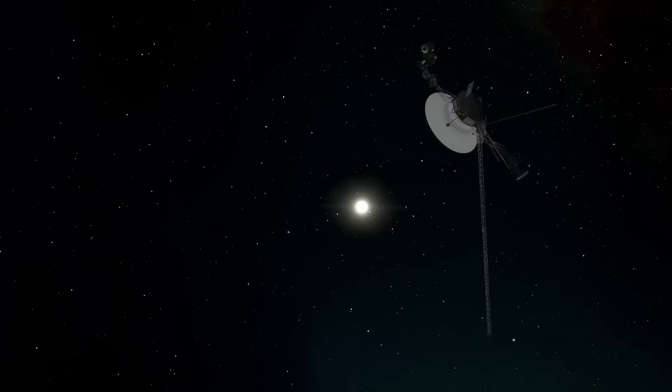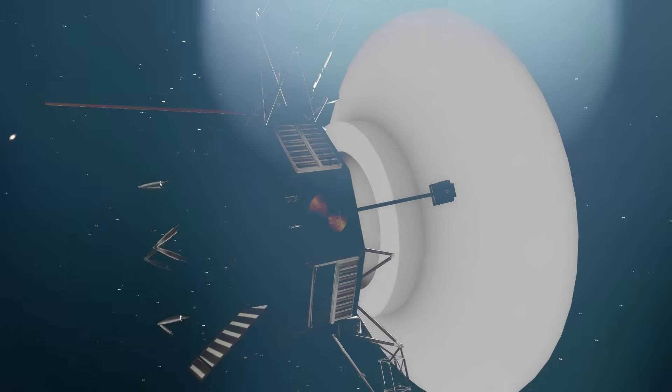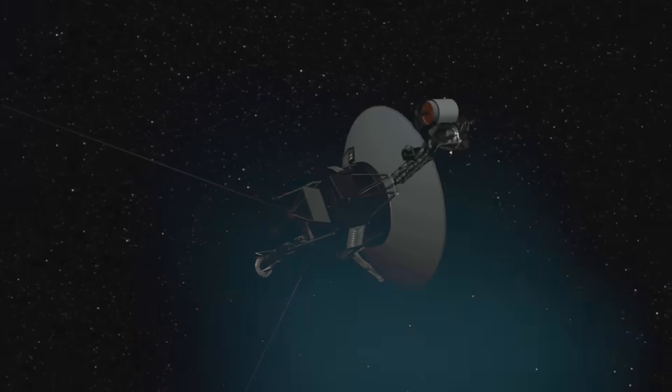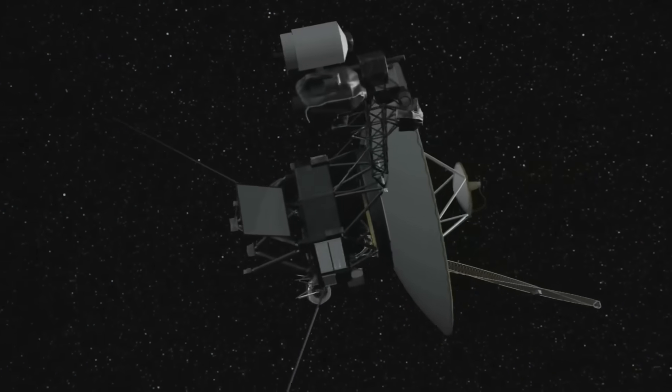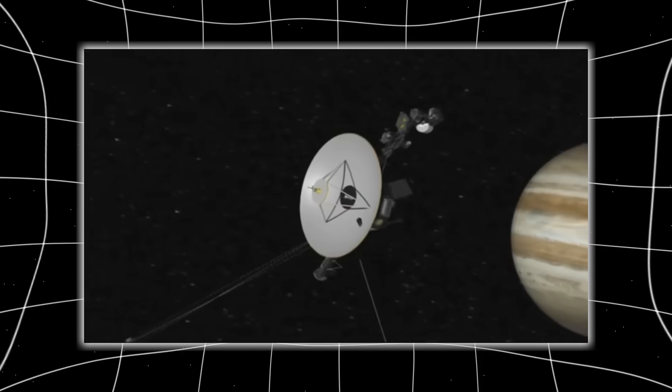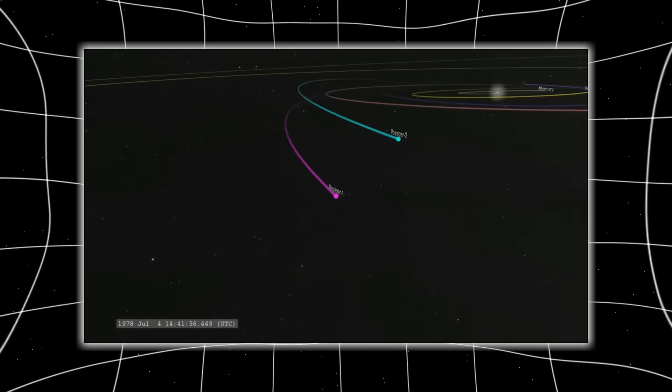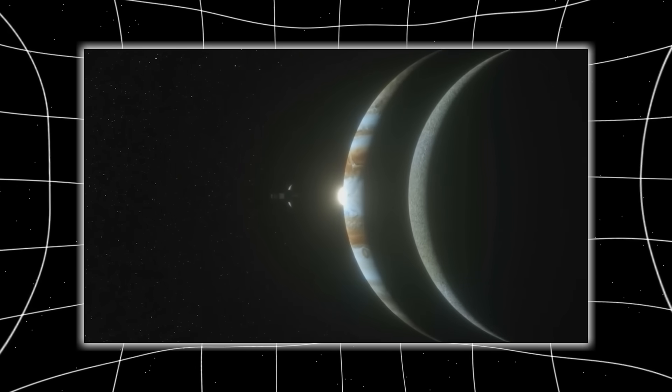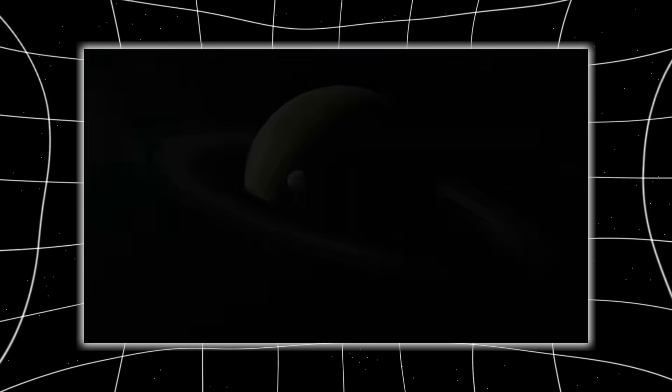Voyager 2, a fragile, aging spacecraft launched when disco ruled Earth and computers filled entire rooms, was never meant to survive this long. And yet, almost 50 years later, it's still out there, whispering secrets from the edge of existence.